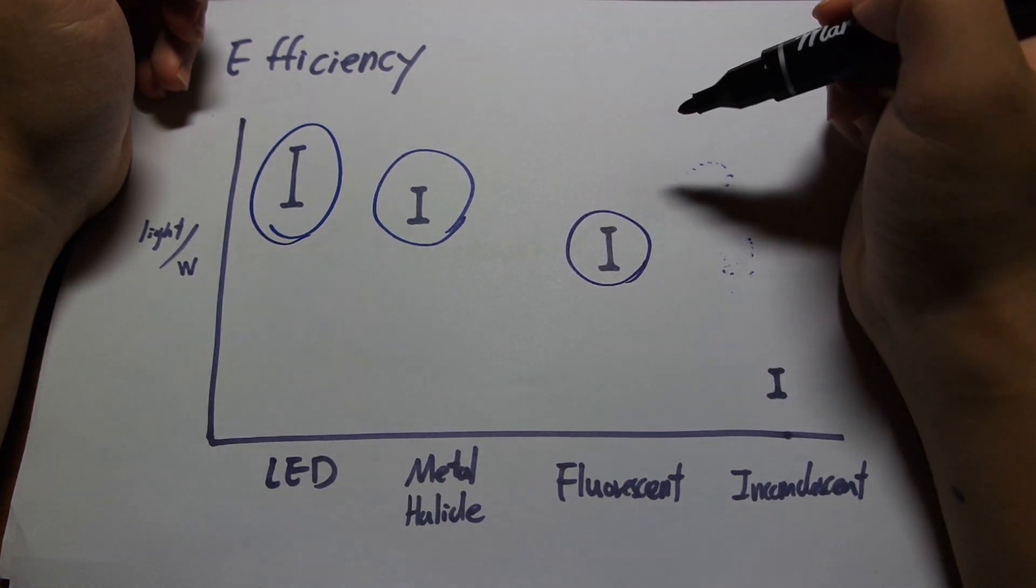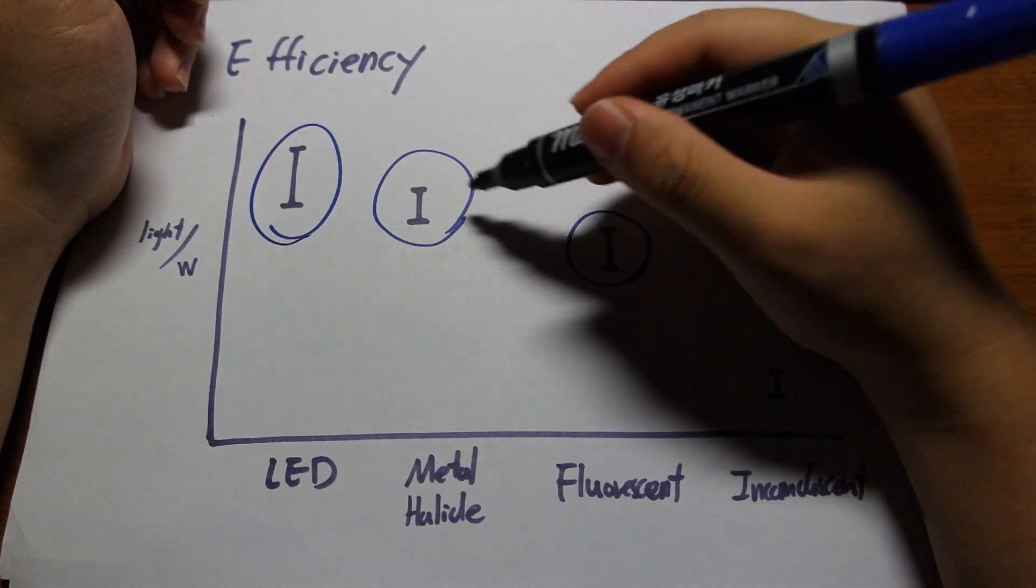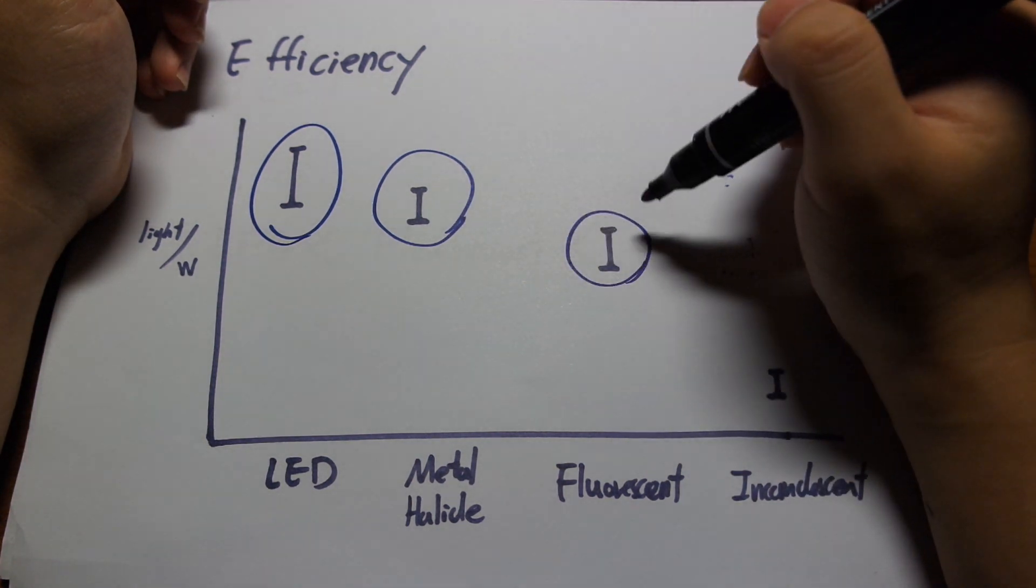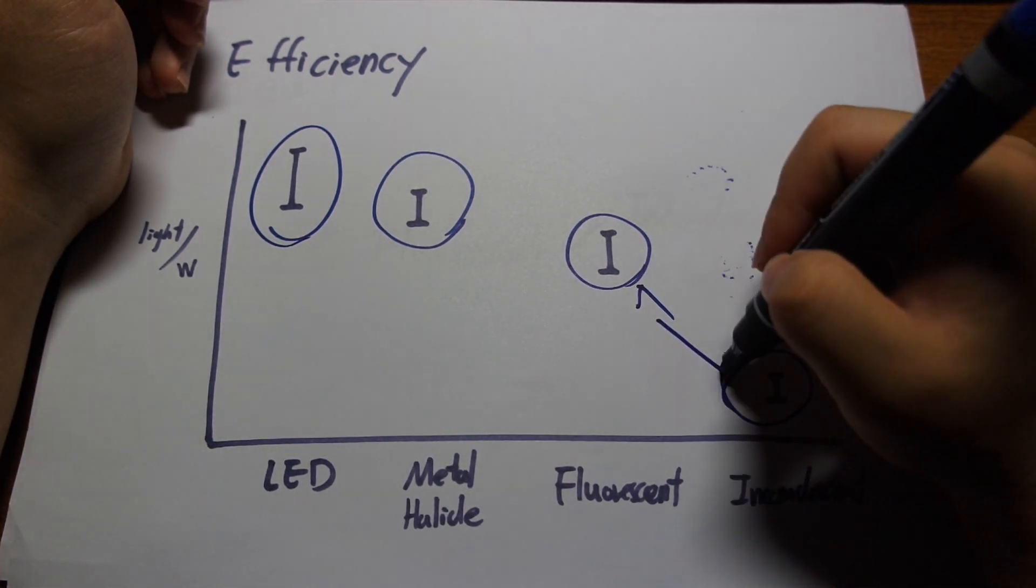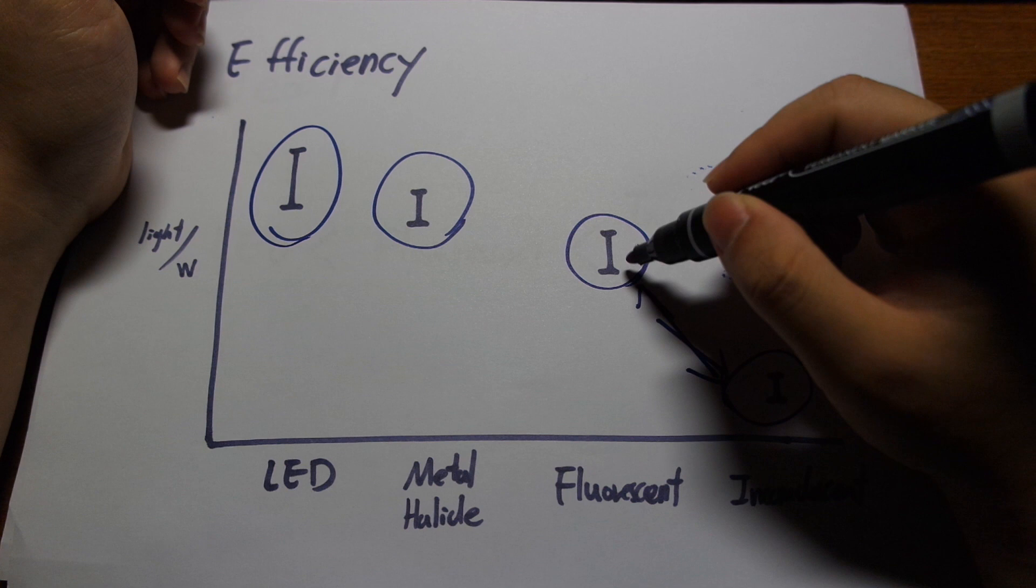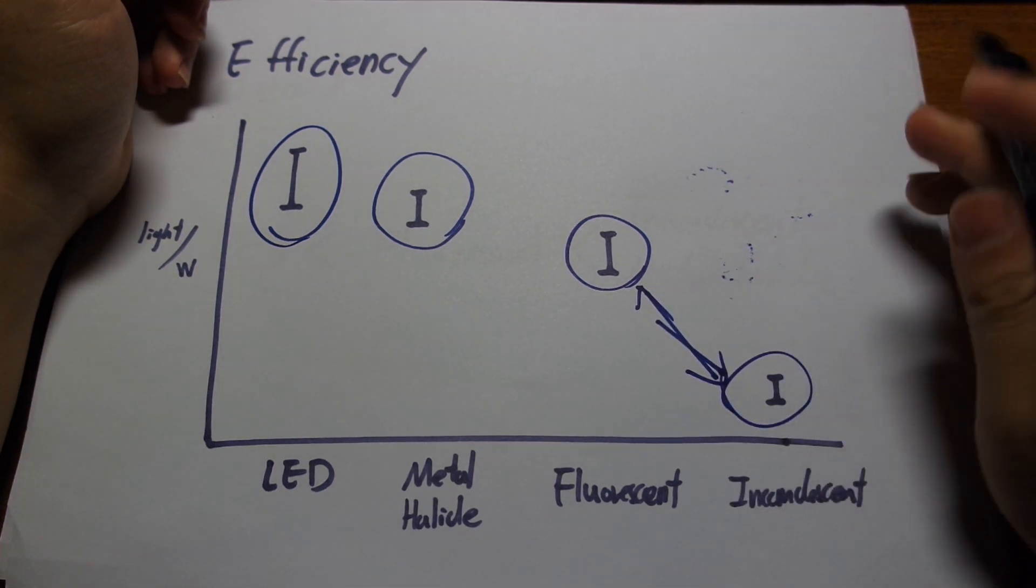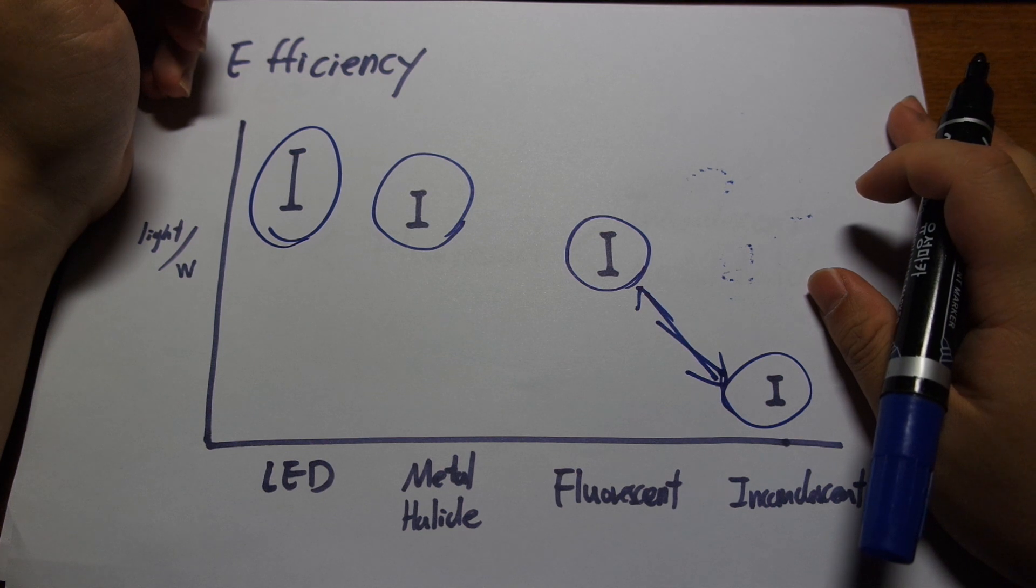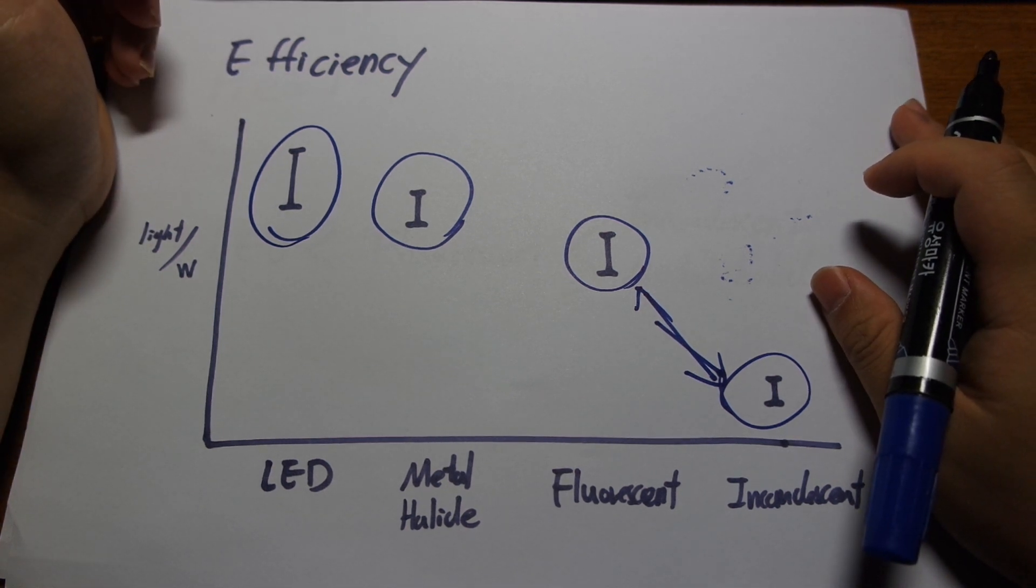Fluorescent bulbs are also pretty good but not quite as good as LEDs, but they are okay in terms of efficiency. So they are in the middle there. And the incandescent bulbs, there are miles of gap here. They are hugely inefficient in terms of light produced. They produce tons of heat. So which has the highest efficiency? LEDs, and maybe metal halides is the second up close.